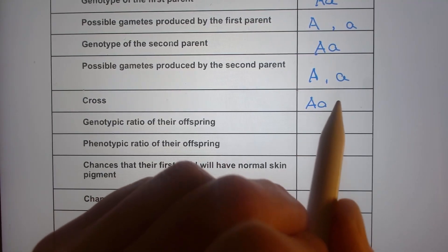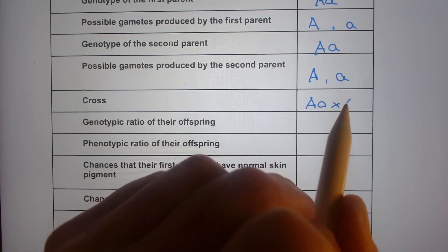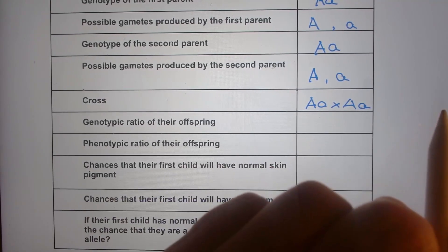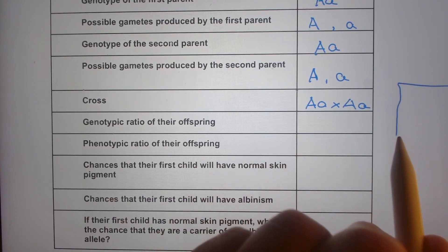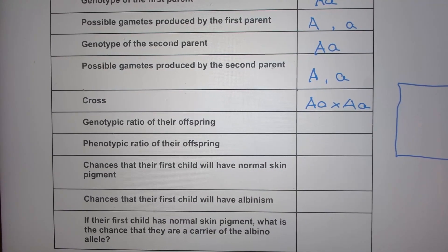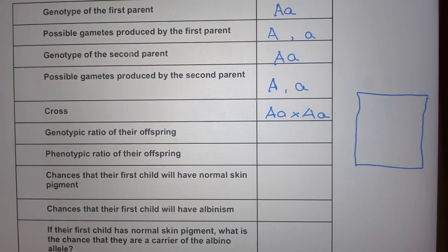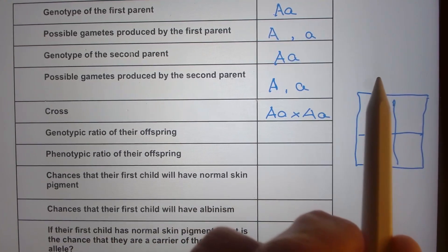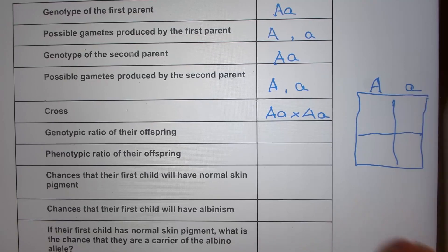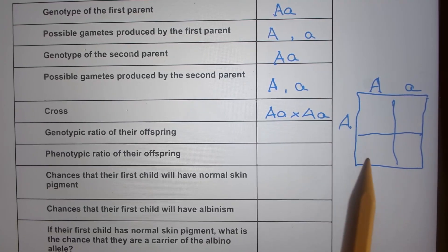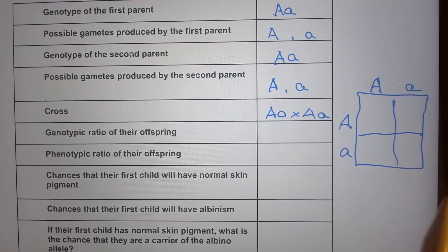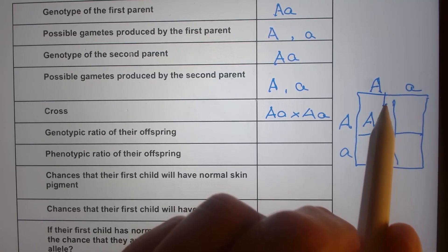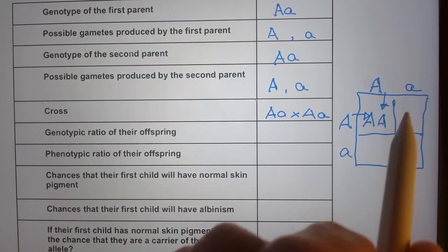The cross is written out as capital A lowercase a times capital A lowercase a. Now we set up the Punnett square — the possible gametes of the first parent along one side and the possible gametes of the other parent along the other side.